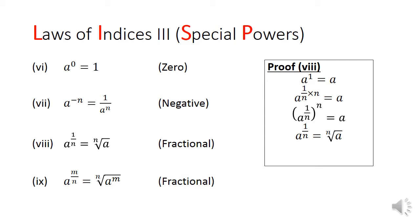In law 8 and 9, we deal with fractional indices. Law 8 states that a to the power of 1 over n is the nth root of a. The proof goes that since a to the power of 1 is equal to a, and we break that 1 into 1 over n times n, we get a to the power of 1 over n in brackets to the power of n, giving us a to the power of 1 over n. You can see how raising a to the power of 1 over n is reversed when we raise it again by n. Hence, we can conclude that a to the power of 1 over n is the nth root of a. This can be likened to how square root is the reverse of squaring.